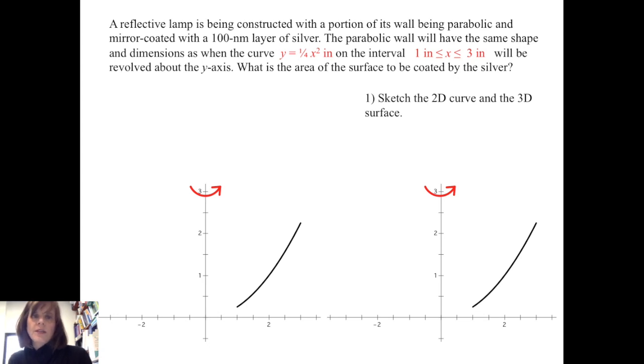Suppose a reflective lamp is being constructed with a portion of its wall being parabolic and mirror-coated with a 100 nanometer layer of silver. The parabolic wall will have the same shape and dimensions as when the curve y equals one-fourth x squared inches on the x interval from one inch to three inches will be revolved about the y-axis. We want to find the resulting area of the surface to be coated by the silver.